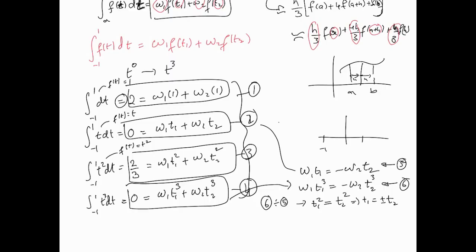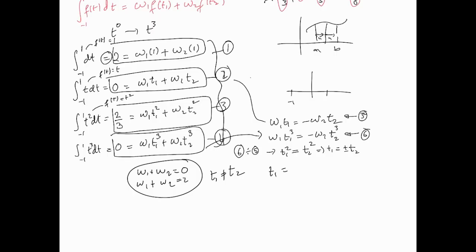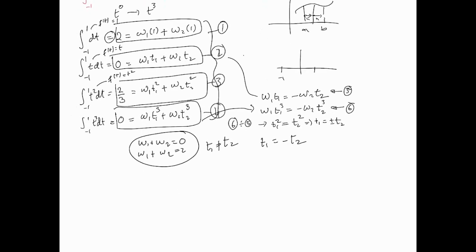Setting t1 = t2 doesn't work: substituting into equation two gives w1·t1 + w2·t1 = 0, meaning w1 + w2 = 0, which contradicts equation one where w1 + w2 = 2. So t1 = t2 is rejected. The only remaining possibility is t1 = -t2, and we proceed with that.